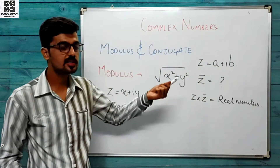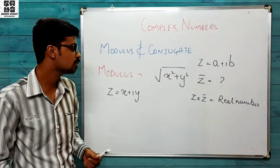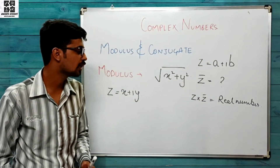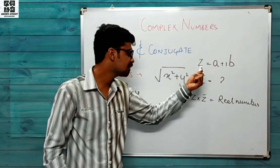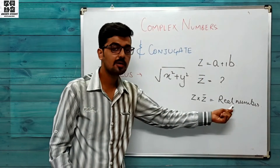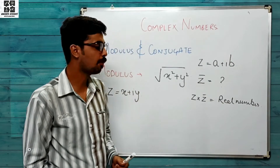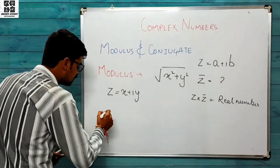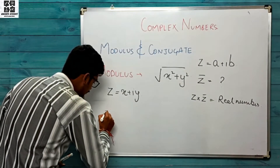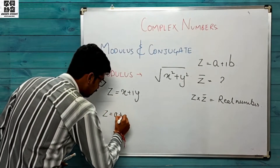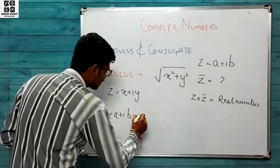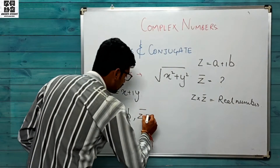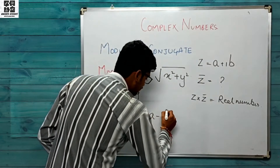Do aise complex numbers honge — as z and z conjugate — aise complex number hoga jo ki original number se multiply hone par ek real number provide karega. Toh uske liye, let us say z = a + ib hai, toh uske liye jo hamesha z-bar ya z-conjugate hoga, that will always be equal to a minus ib.